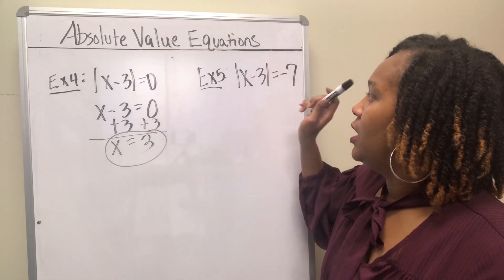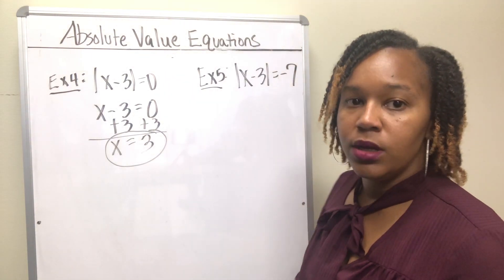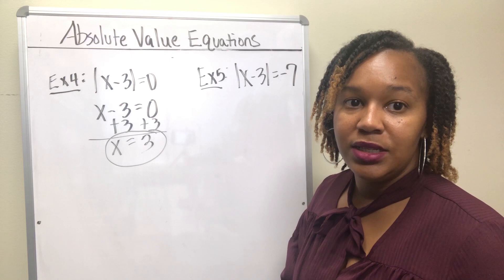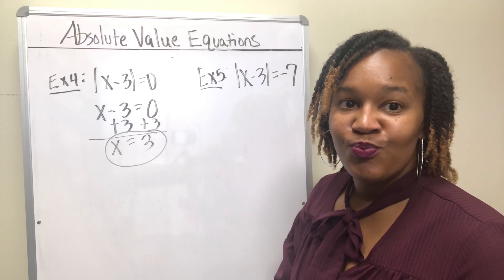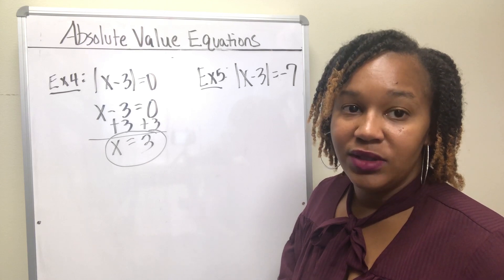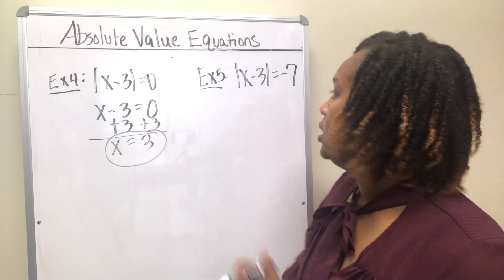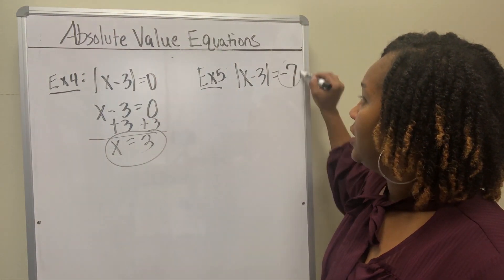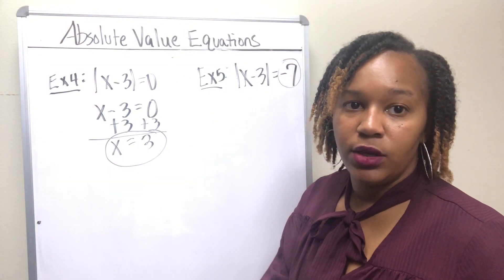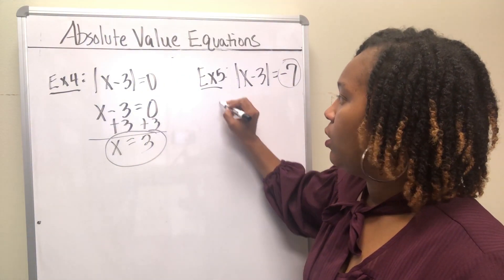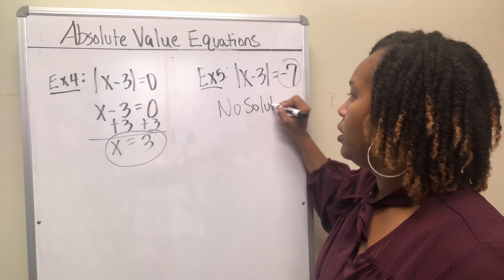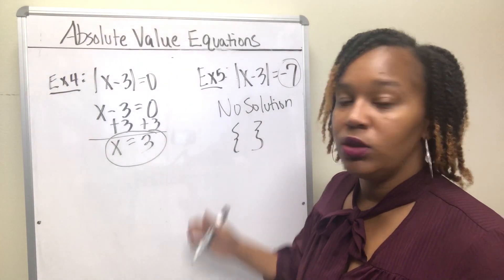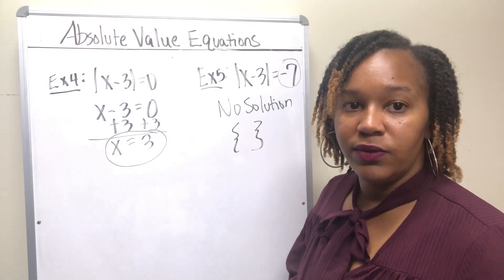The other special case is when an absolute value equals a negative number. Remember, the absolute value measures distance from 0, and distance is always positive — it can never be negative. So an absolute value will never equal a negative number, resulting in no solution. You can write 'no solution' or use the empty set symbol. These are the two special cases for solving absolute value equations.